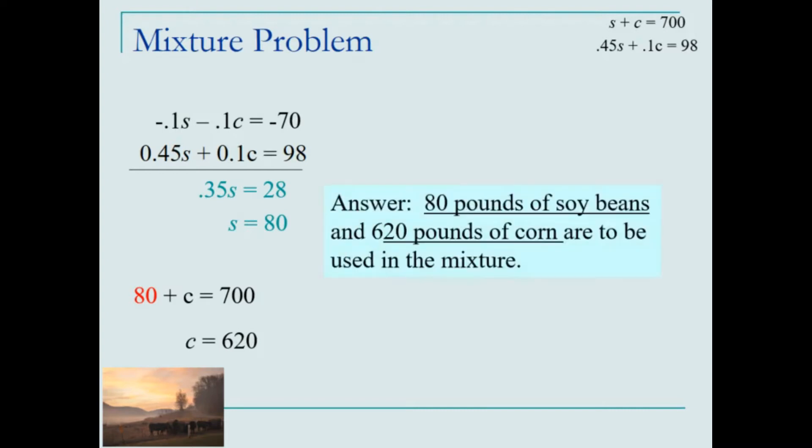To answer the problem, then, we have the following solution: 80 pounds of soybeans and 620 pounds of corn are to be used in the mixture to derive the desired results.